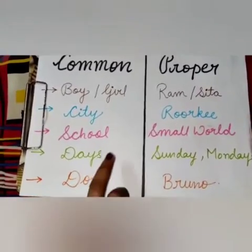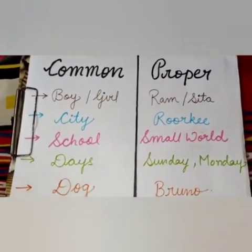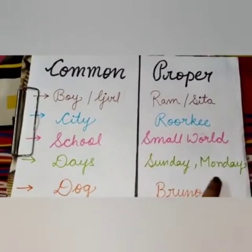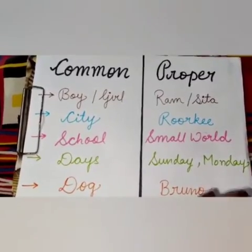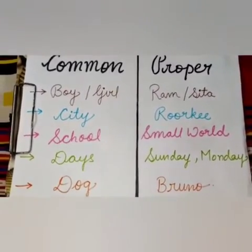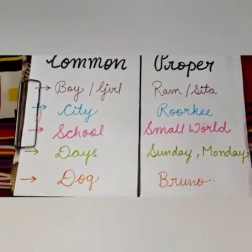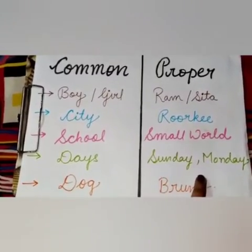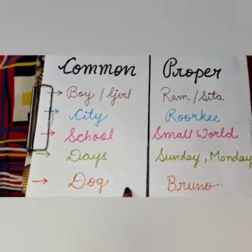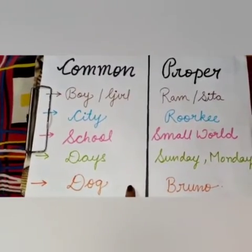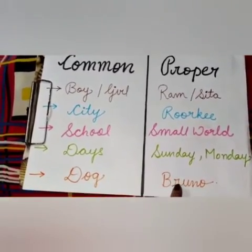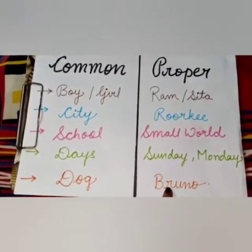Similarly, days — days come under common nouns because we haven't mentioned any particular name. But when I say Sunday, Monday, Tuesday, Wednesday — these are proper names of days, special names given to days, so they are considered as proper nouns. Similarly, when I say dog — dog is a common noun. But when I say Bruno, Bruno is the particular name of a dog, so Bruno will be considered as a proper noun.